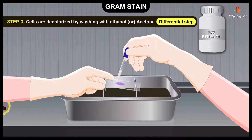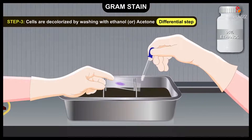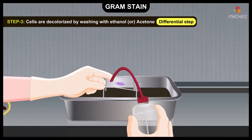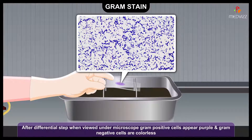The cells are then decolorized by washing with ethanol or acetone — this is the differential step. Gram positive bacteria retain the crystal violet, whereas Gram negative bacteria do not. The ethanol or acetone should be added dropwise with the slide tilted at an angle until the drop coming off the edge just starts to become colorless. Even Gram positive cells can lose the crystal violet-iodine complex during prolonged excessive decolorization. Excess ethanol is then washed off with water. When viewed under the microscope, Gram positive cells appear purple and Gram negative cells are colorless.